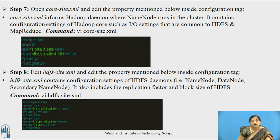Open the core-site.xml file and edit the property inside the configuration tag as shown in the snapshot. core-site.xml informs the Hadoop daemon where the NameNode runs in the cluster and what its name is. It contains configuration settings of Hadoop core, such as I/O settings that are common to HDFS and MapReduce.